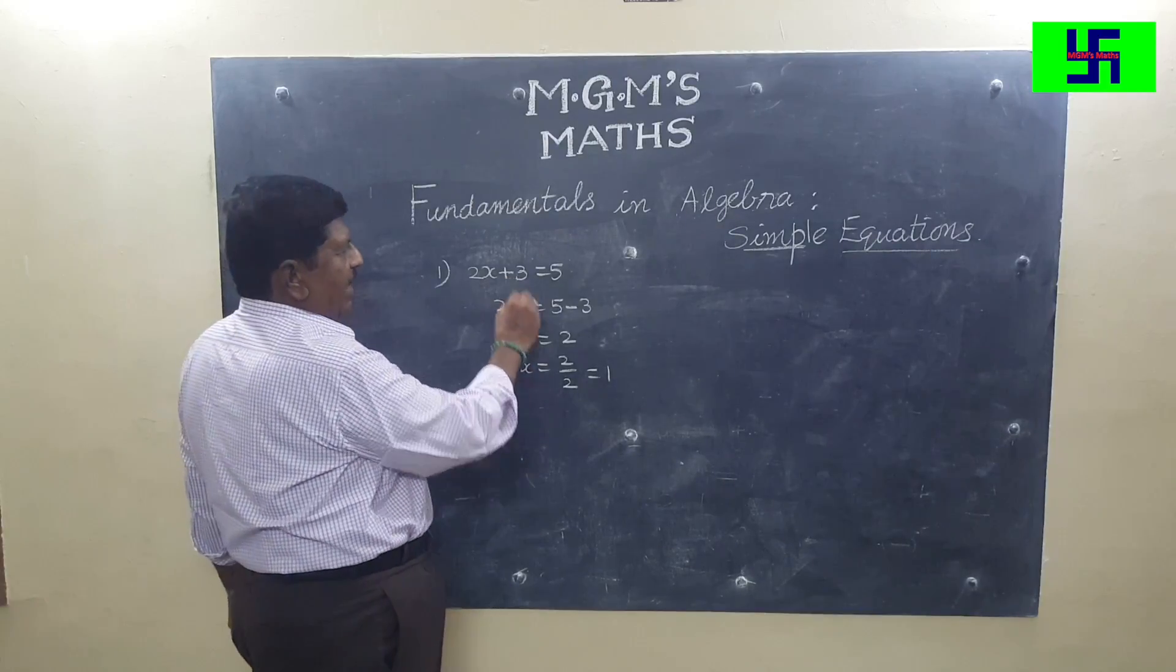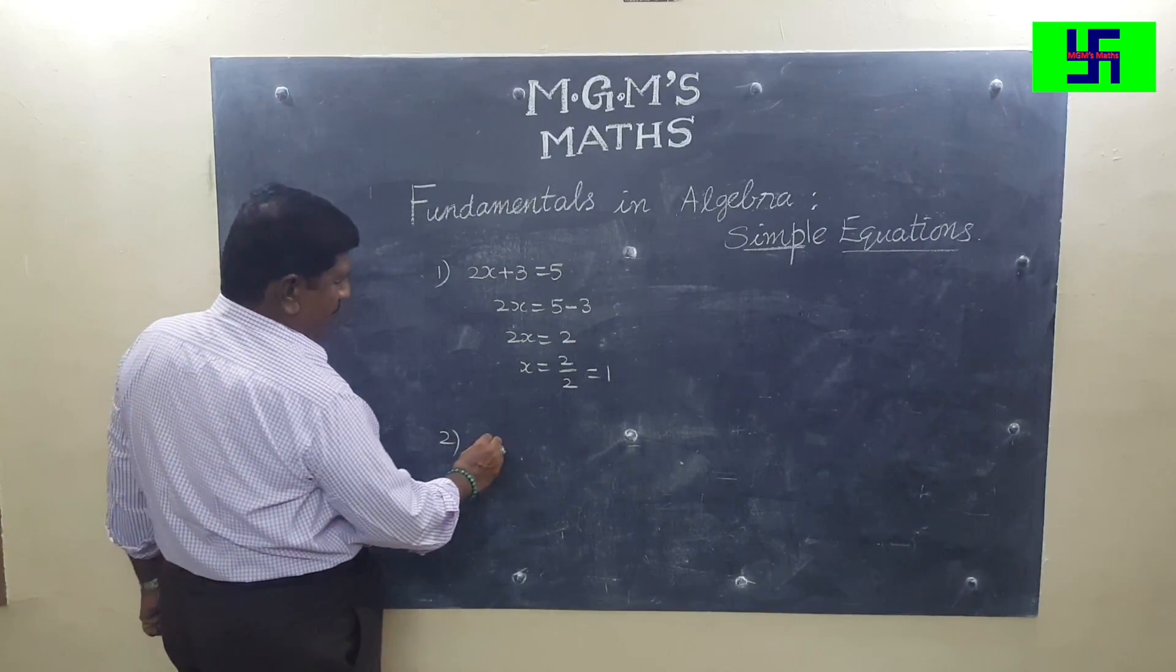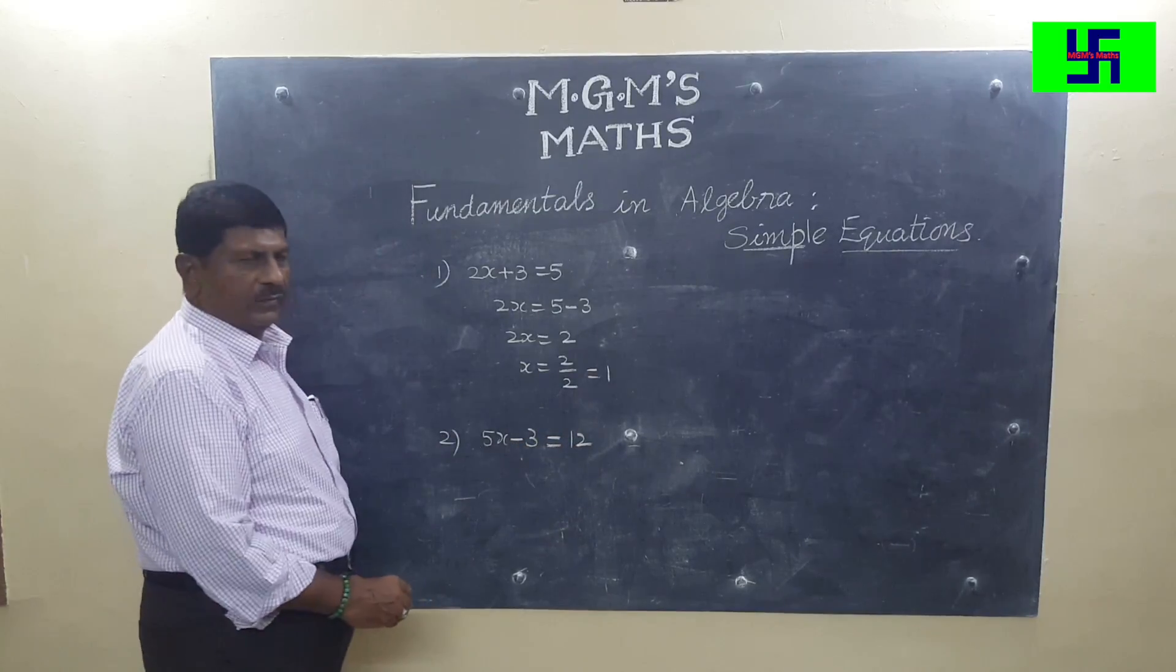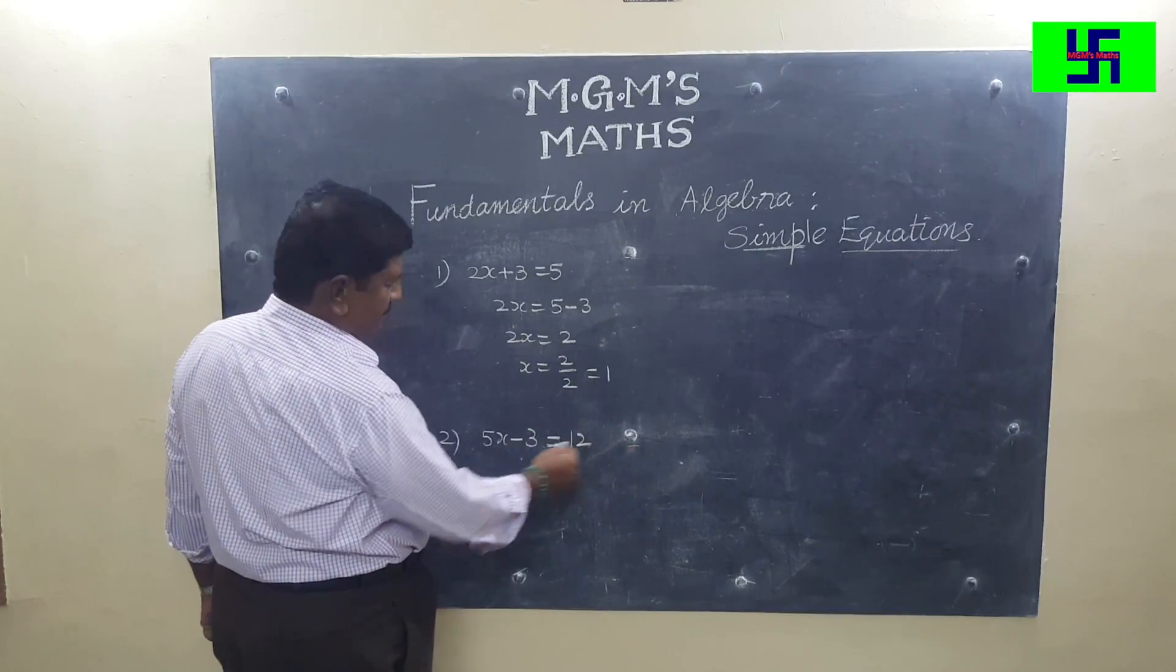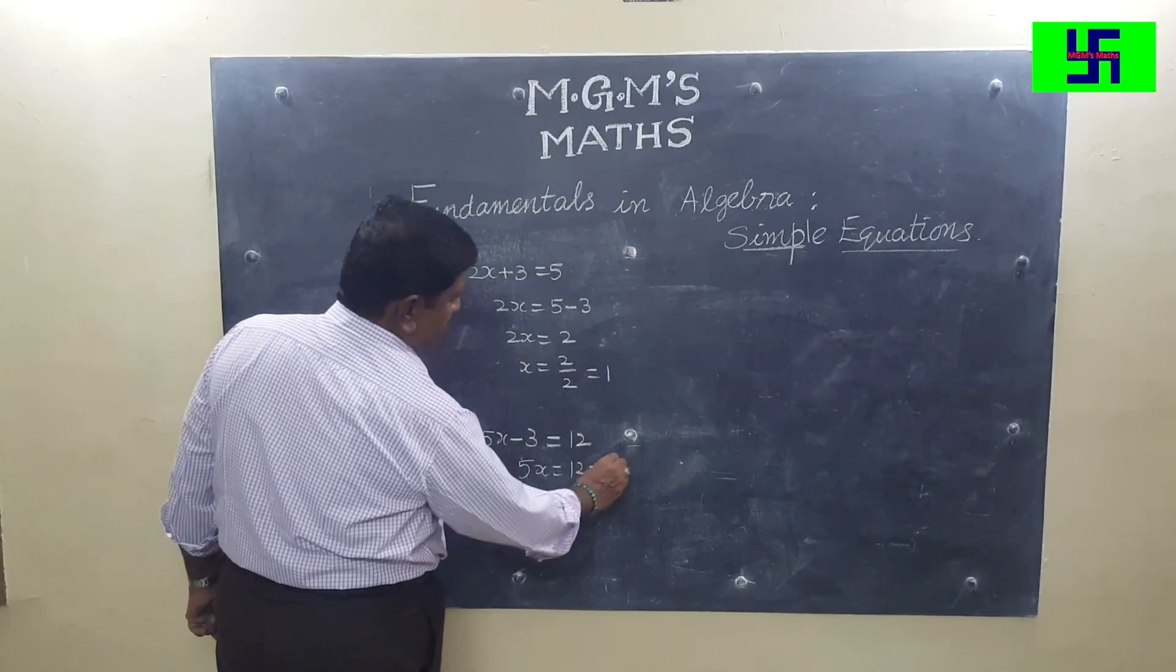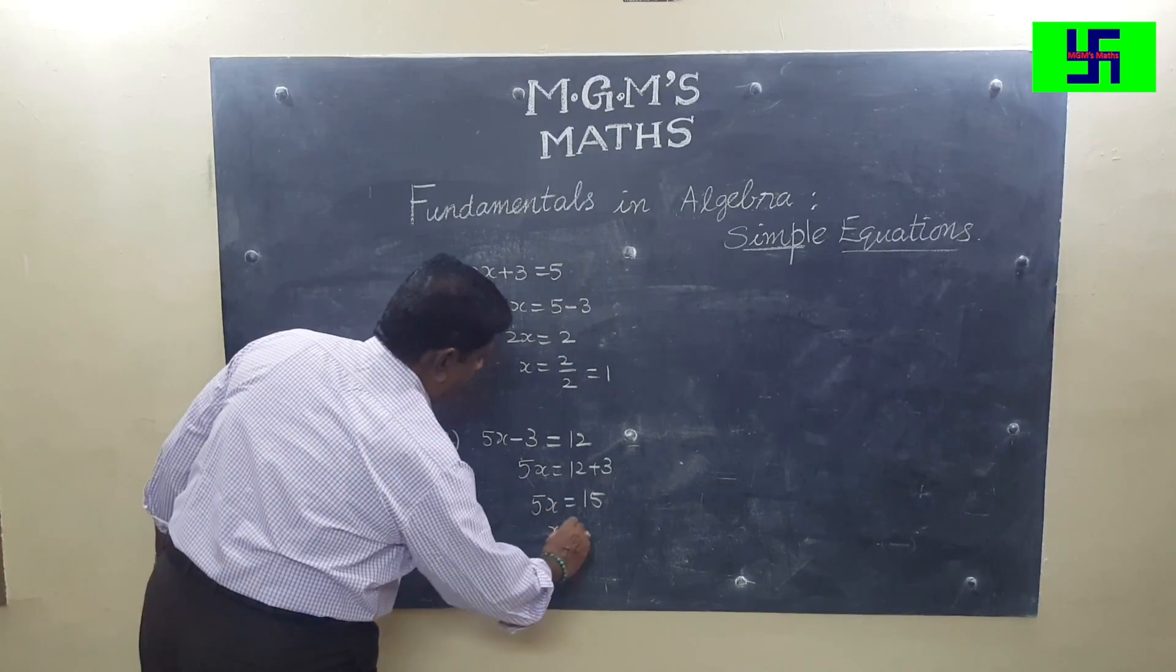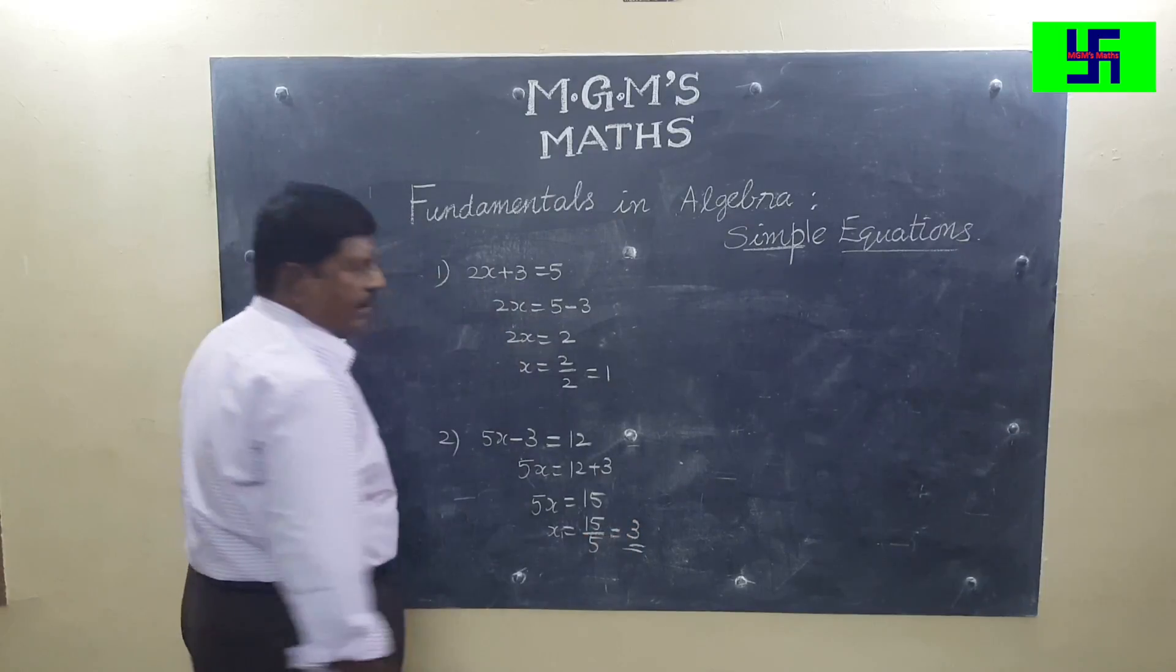Plus sign when taken to the other side becomes minus. Let us see another problem: 5x minus 3 is equal to 12. When minus 3 is here, when we take it to the other side, 5x is equal to 12 plus 3. 5x is equal to 15. x is equal to 15 upon 5, which equals 3.